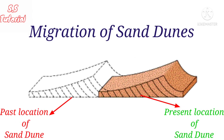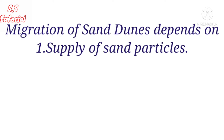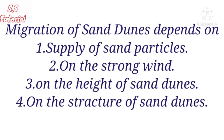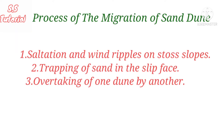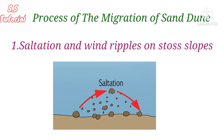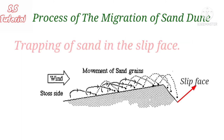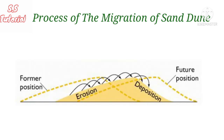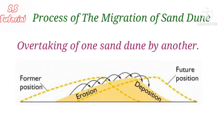Let's know the migration of sand dunes. Generally, sand dunes are not stable — they move over time. Migration of sand dunes depends on the supply of sand particles, the strength of the wind, the height of sand dunes, and the structure of sand dunes. Migration of sand dunes occurs generally by several processes: the most important are saltation and wind action on stoss slopes, trapping of sand in the slip face, and overtaking of one dune by another.